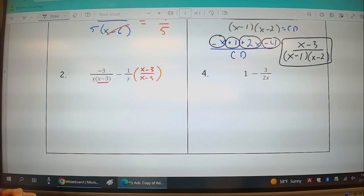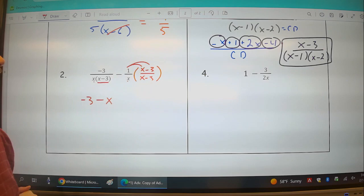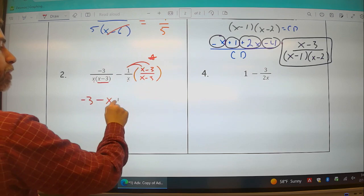Now I have negative 3 minus whatever 1 times x is, 1x, and whatever 1 times negative 3 is. Now heads up, this is important. Minus 1 times negative 3, that's minus negative 3, that's plus 3.